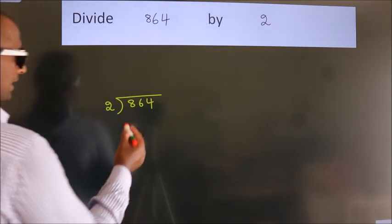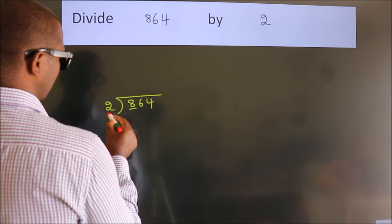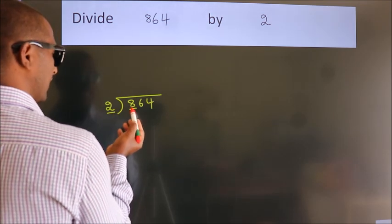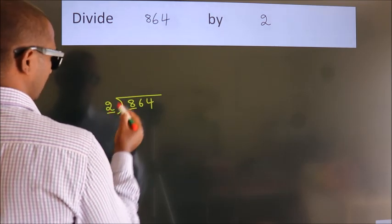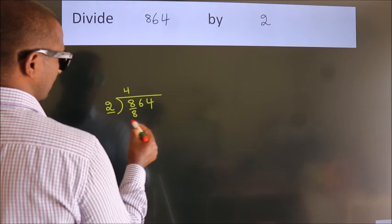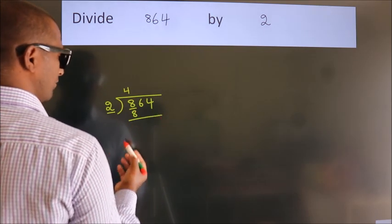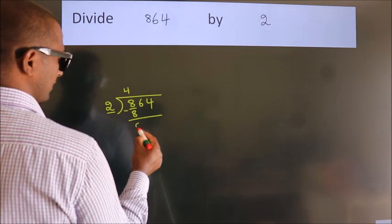Next, here we have 8, here 2. When do we get 8? In two's table, 2 fours are 8. Now we should subtract, we get 0.